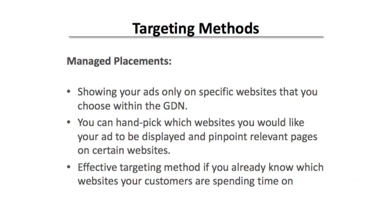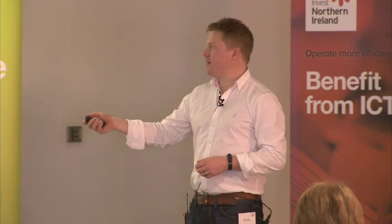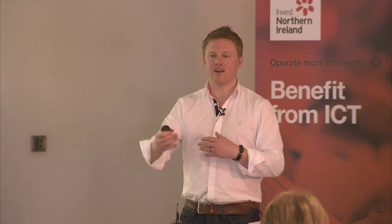Then there's managed placements — showing your ads on specific websites that you choose. You go into the display planner within Google, type in the website you're interested in, and it tells you if you can appear there. For equestrian products, you could go to Google and say you want to be on Horse Weekly. If you don't know your managed placements, use one of these targeting methods to look at your data, see where you're appearing successfully, then move into managed placements. You can handpick websites and pinpoint relevant landing pages — for example, going on Horse Weekly under the Products and Services section rather than the blogs. It's an effective targeting method if you already know where your customers are spending time.